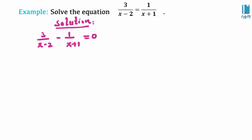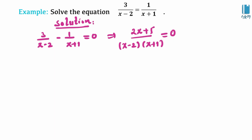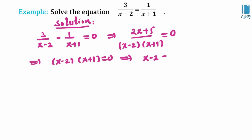We have 2x plus 5 over x minus 2 times x plus 1 equal to zero. The denominator restrictions are: x minus 2 equals 0, so x equals 2; and x plus 1 equals 0, so x equals negative 1.